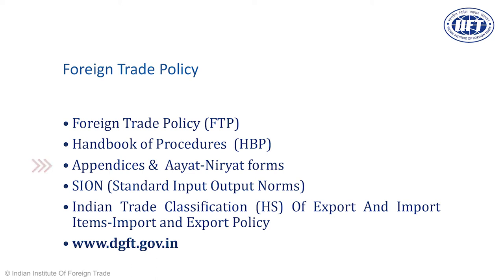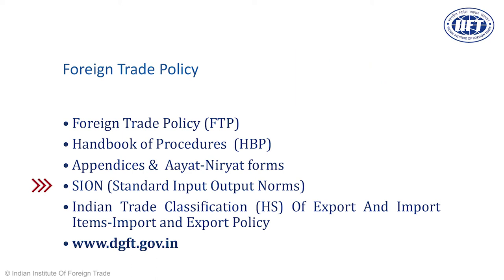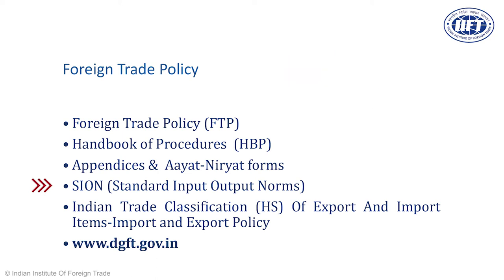Then we have the SION — standard input output norms — which is required for schemes implemented under chapter four of the foreign trade policy. The Indian trade classification ITC HS system is something all exporters know. This is the eight-digit code-wise import and export policy for exporters, and it is in line with the codes used at the time of export and import by the customs authorities.